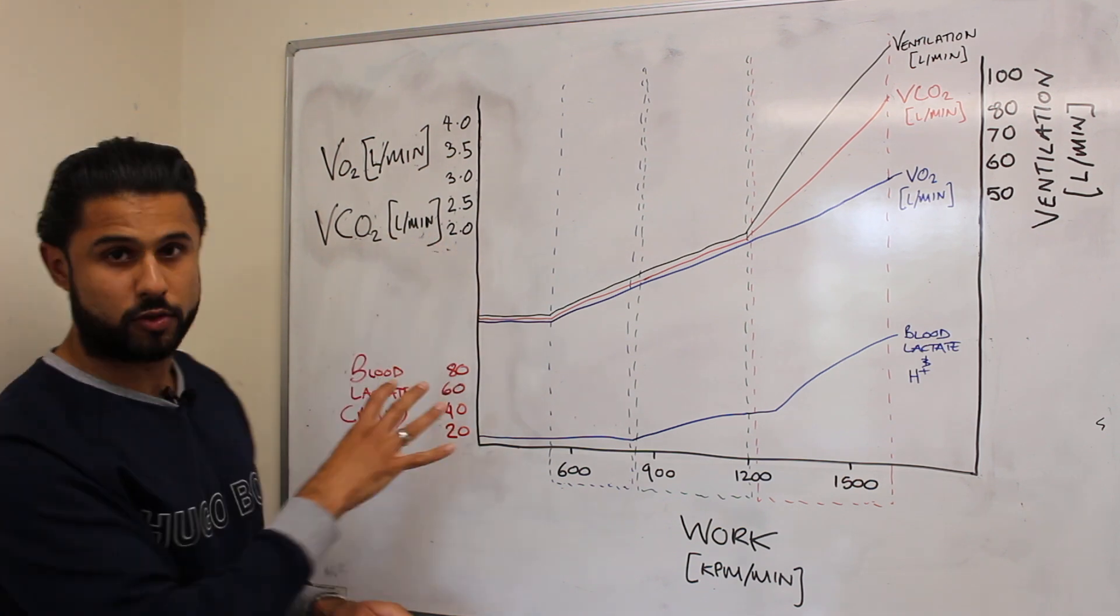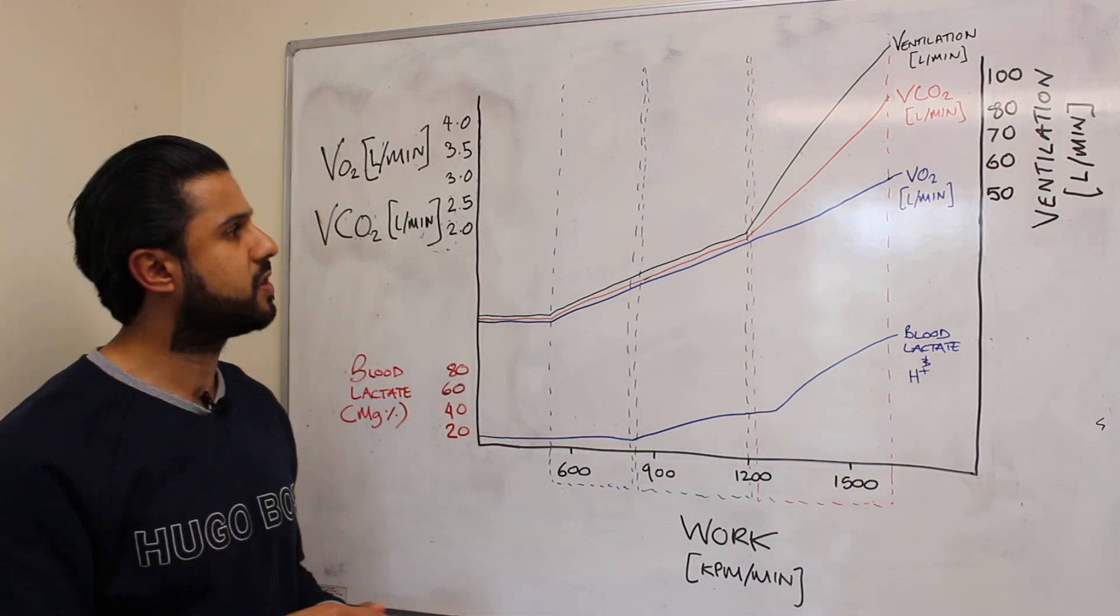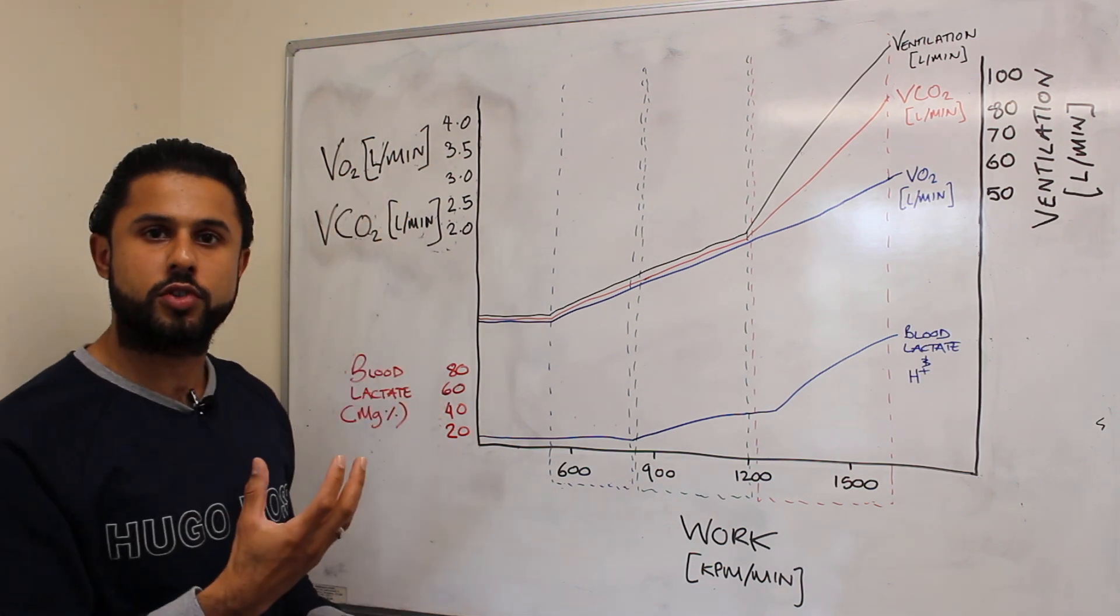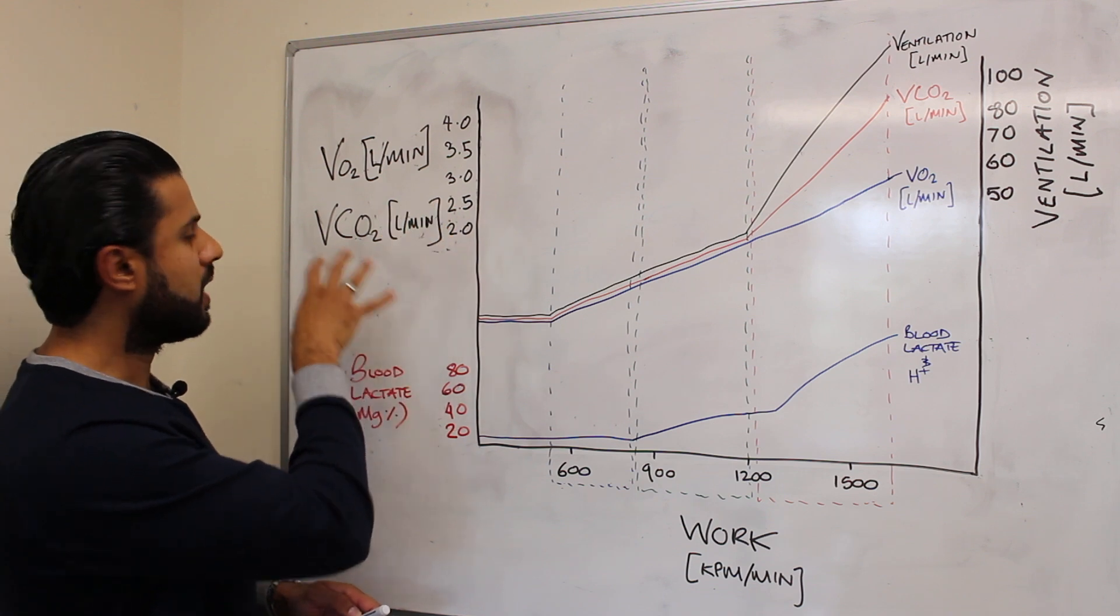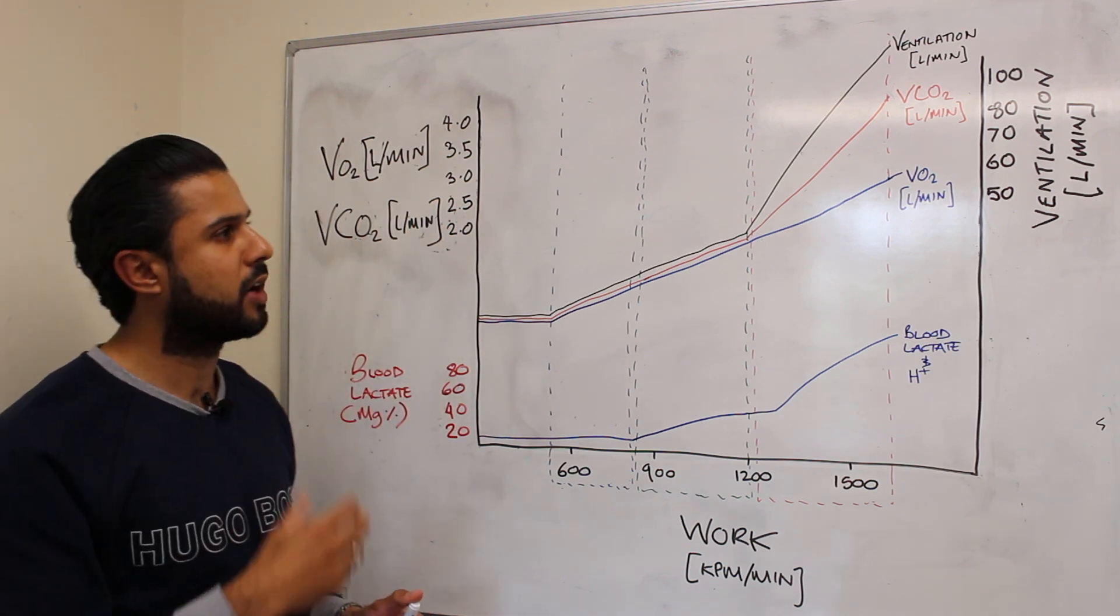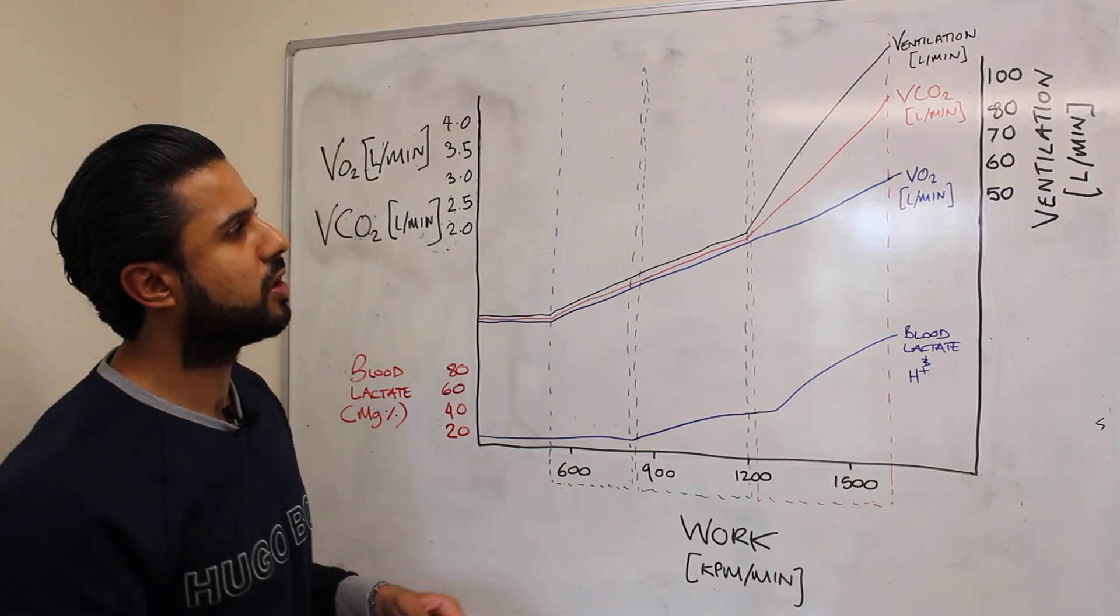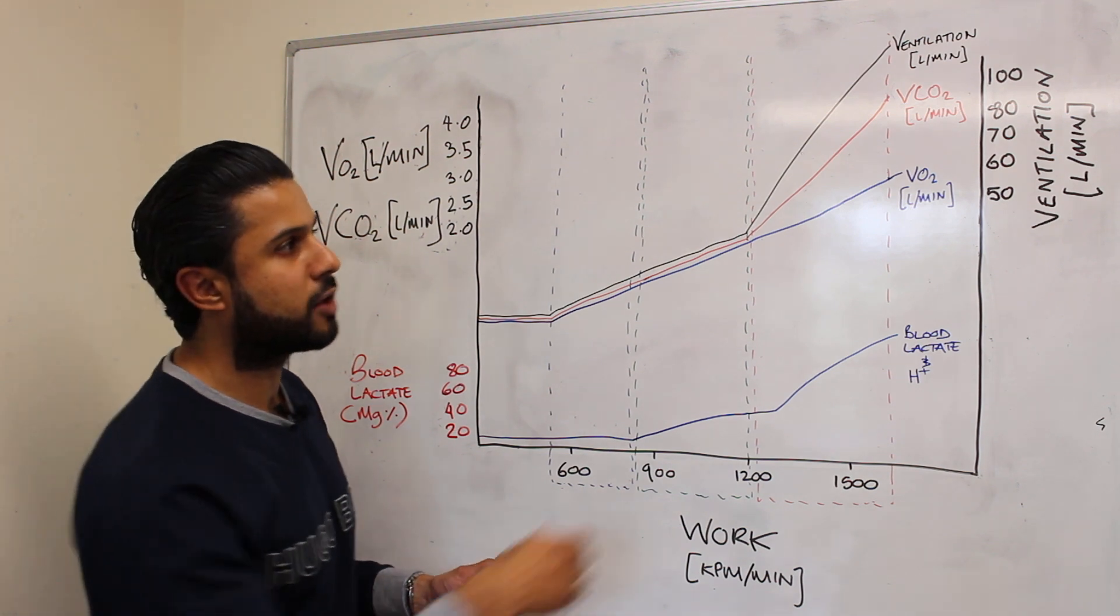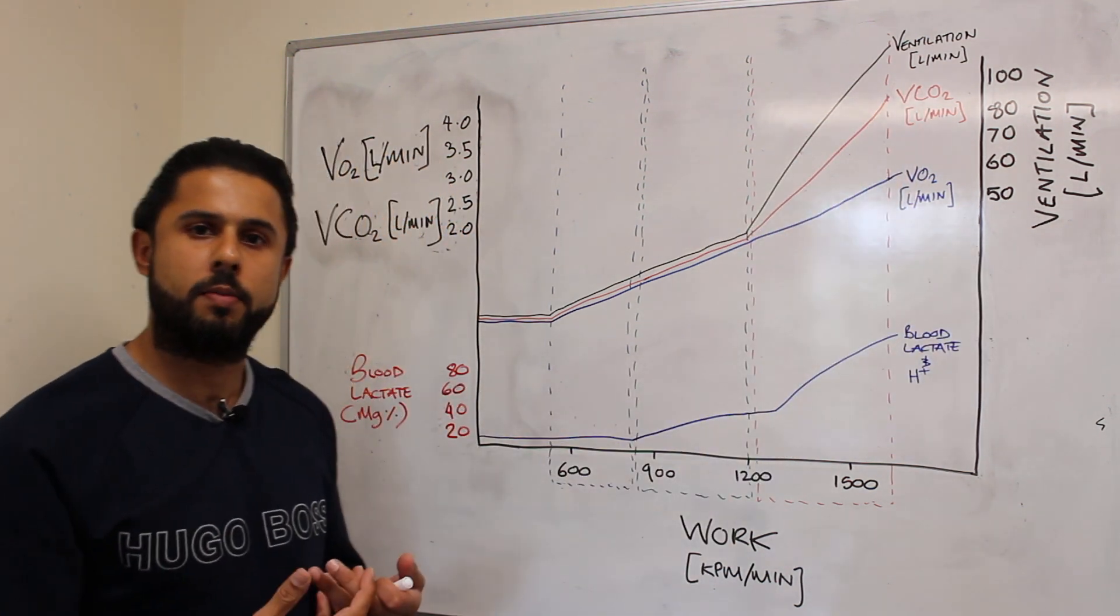Now all of this data can be collected in an exercise physiology laboratory. So we've got VO2 or oxygen consumption data which can be taken in litres per minute and also the amount of carbon dioxide that is expired can also be measured using Douglas bags in an exercise physiology laboratory and we can then plot out the data including ventilation. So we've got ventilation here in litres per minute.